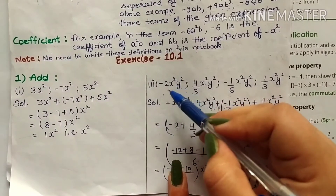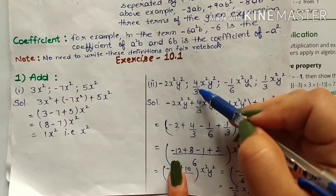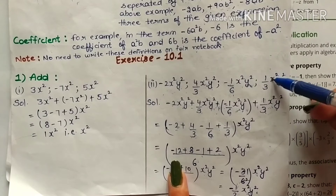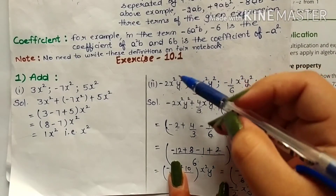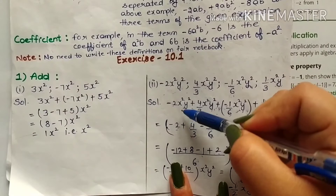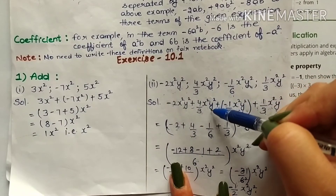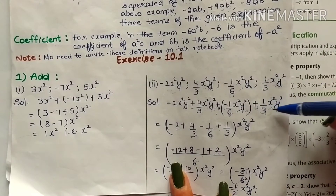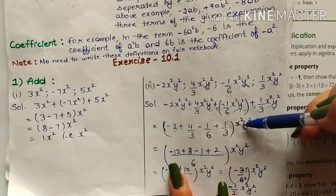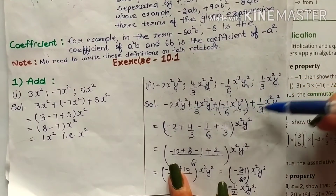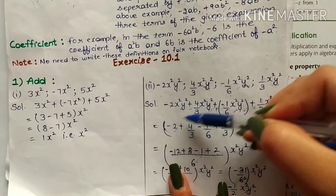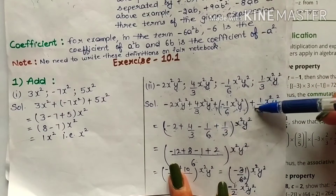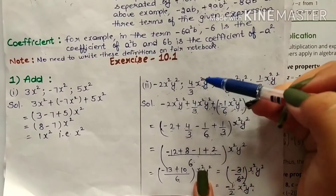Second: add minus 2x square y square, 4 over 3 x square y square, minus 1 by 6 x square y square, and 1 by 3 x square y square. Solution: minus 2x square y square plus 4 by 3 x square y square plus minus 1 by 6 x square y square plus 1 by 3 x square y square. Taking x square y square as common: minus 2 plus 4 by 3 minus 1 by 6 plus 1 by 3. We will solve it by taking LCM.